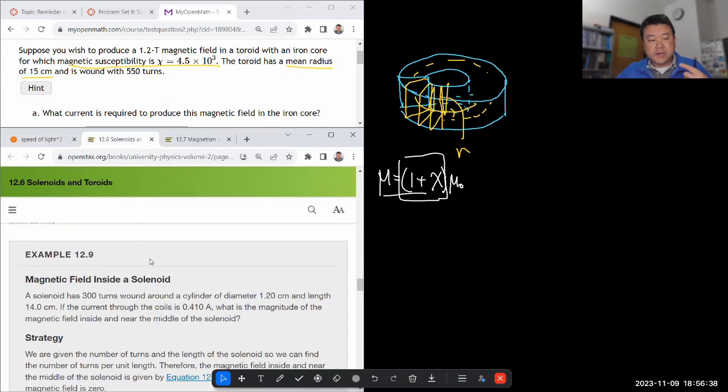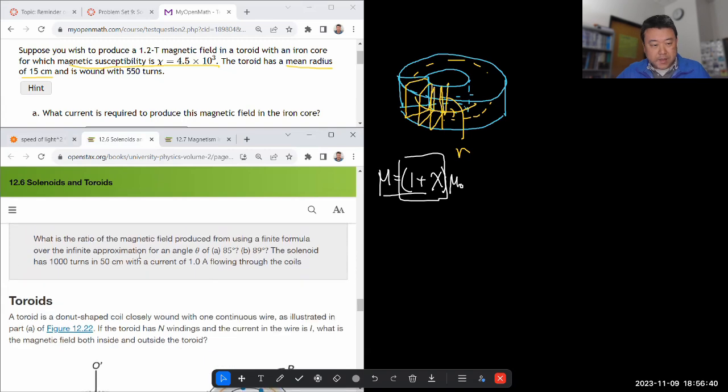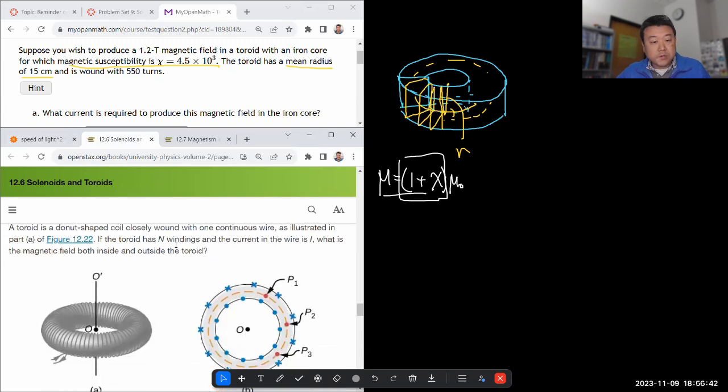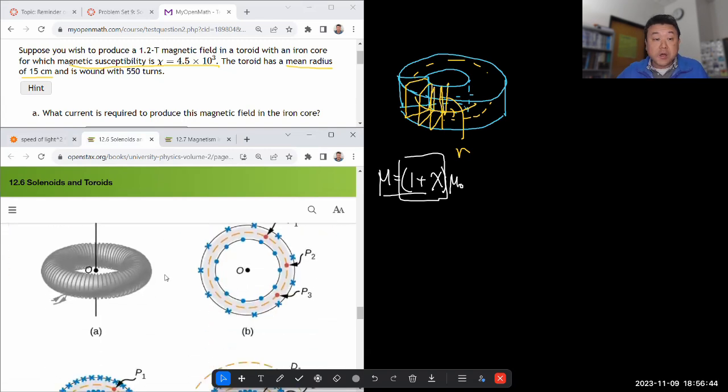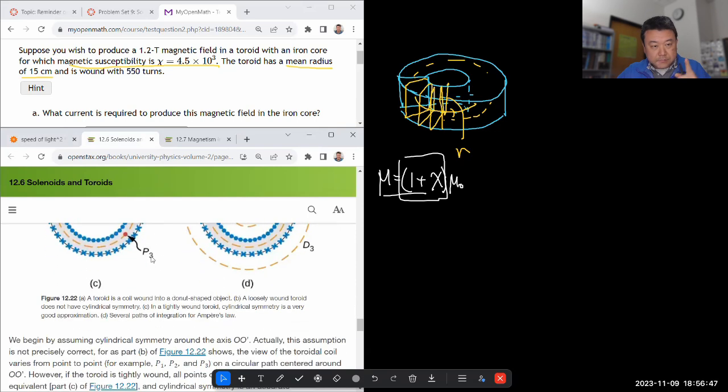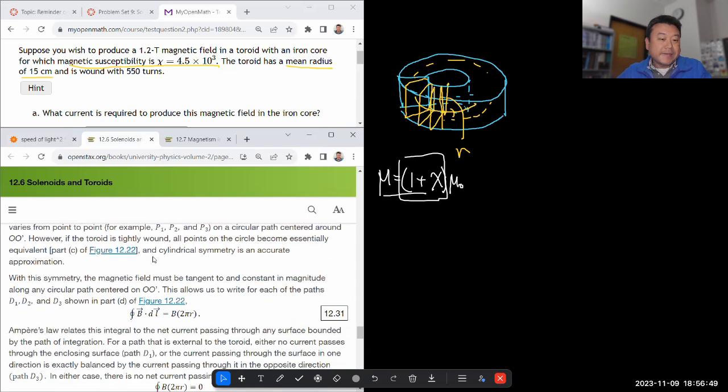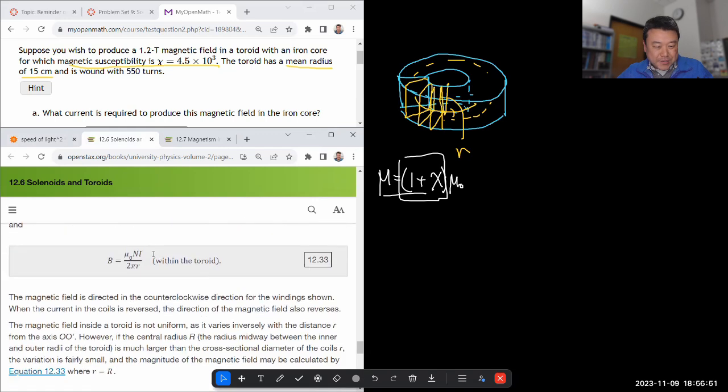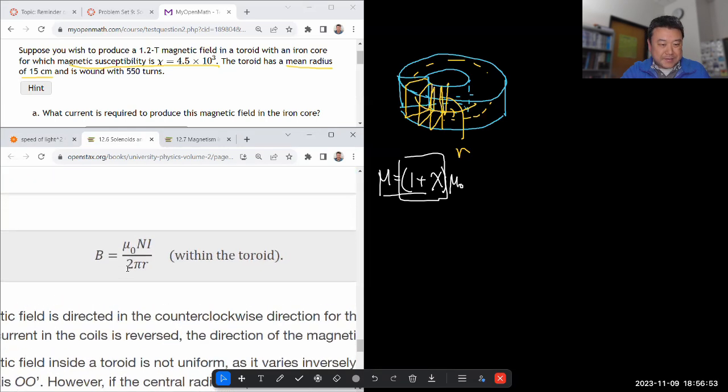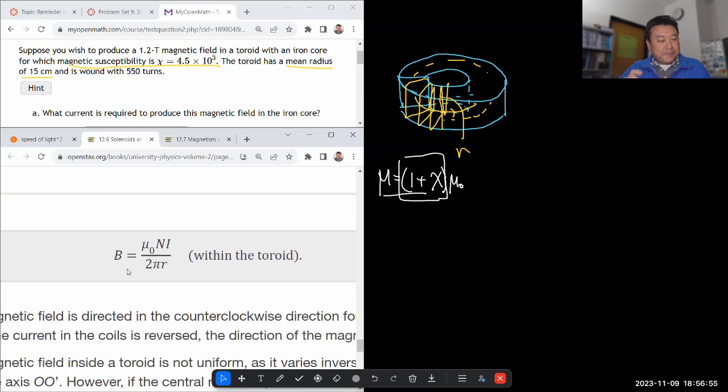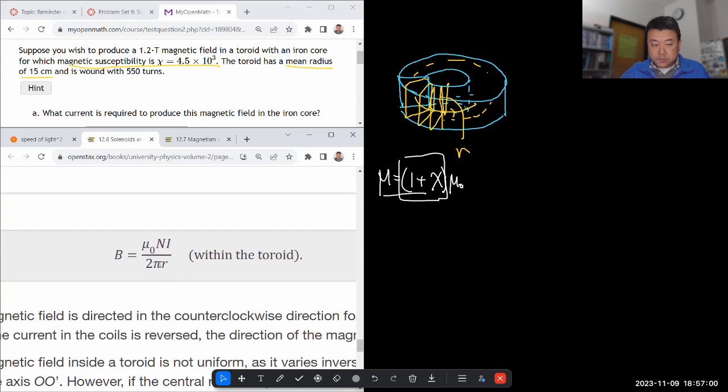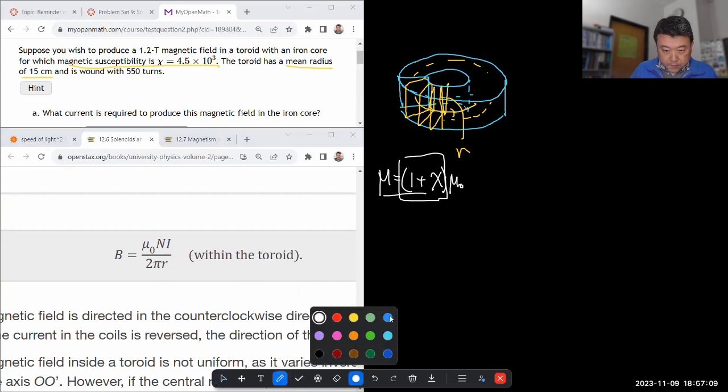And I also did this derivation in lecture. But if you don't have that, then you can also find it in the textbook. They do the derivation using Ampere's law. It's pretty fun. If I wasn't running short on time, I would do it. When you finish the derivation, this is the magnetic field within the toroid with r being the distance from the center of the toroid to the point.